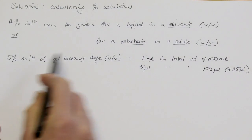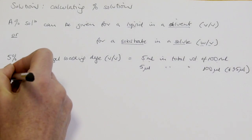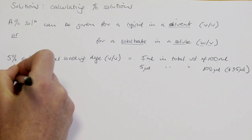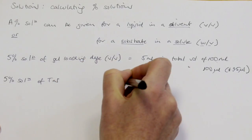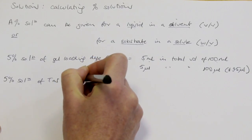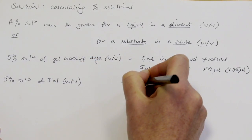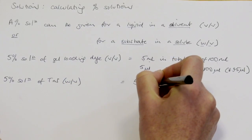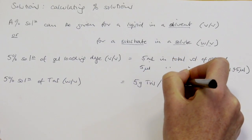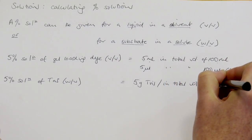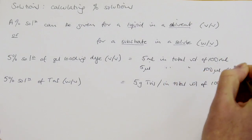The same can be done for dry substrates as well. If I had wanted a 5% solution of tris — and that is weight per volume — it would have been five grams of tris in a total volume of a hundred mils. You would weigh in the five grams of your substrate and then top the volume up with your solute to a hundred mils.